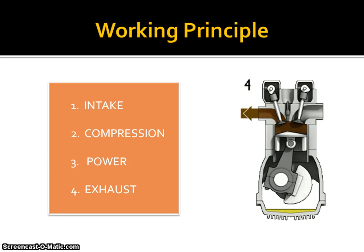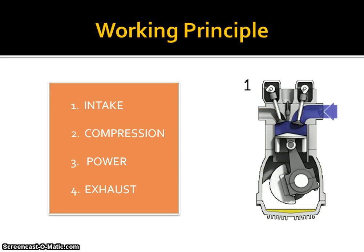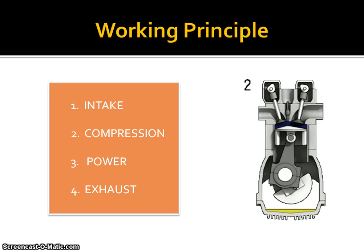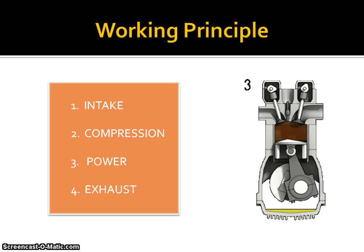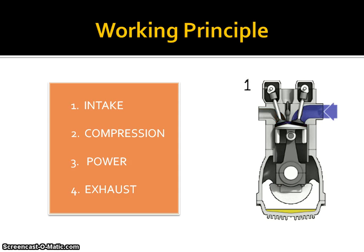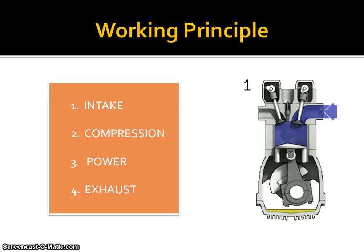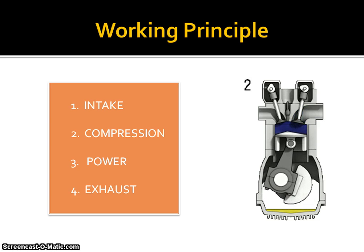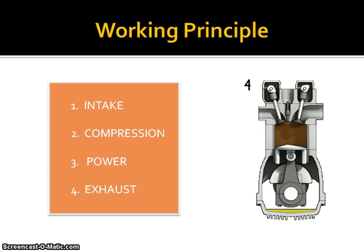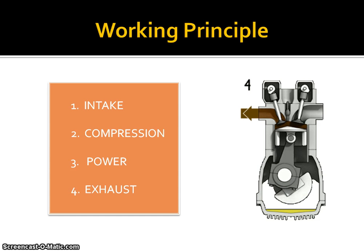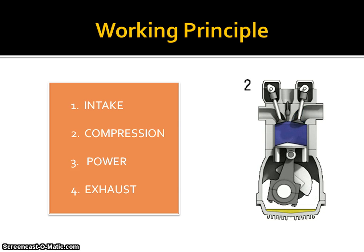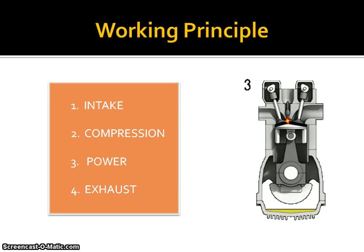The piston compresses the air or air-fuel mixture. Third, the power stroke: this is the start of the second revolution of the cycle. While the piston is near top dead center, combustion occurs. Fourth, the exhaust stroke: the piston once again returns to top dead center while the exhaust valve is open, expelling the exhaust gases through the exhaust.